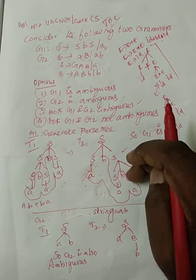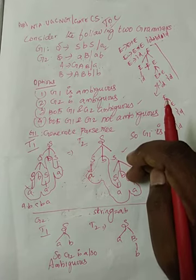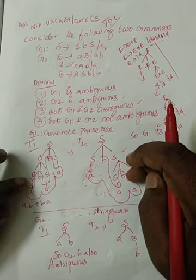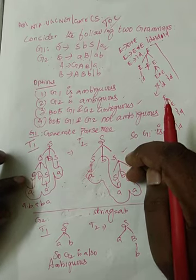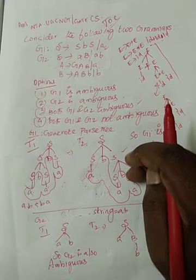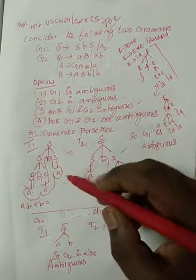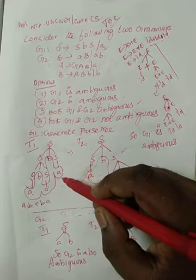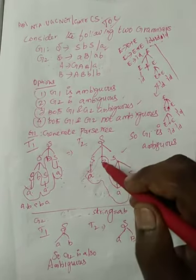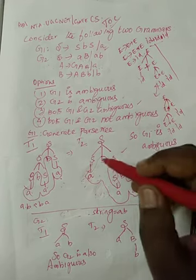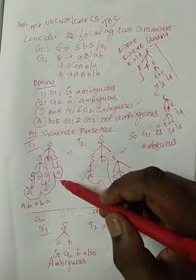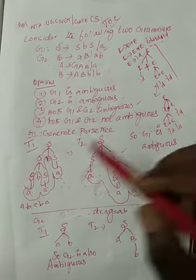And, one more thing you want to keep in mind. This kind of more than two trees has to be generated either with the help of leftmost derivation or rightmost derivation. We should not generate one tree with the leftmost, another tree with the rightmost and claim that it's ambiguous. That is, we should keep in mind. So now, we used only leftmost derivation. So G1 is ambiguous.